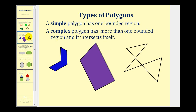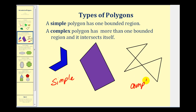Sticking to the previous definition of a polygon, there are two types of polygons. A simple polygon has one bounded region where the sides do not intersect. A complex polygon has more than one bounded region because the sides do intersect. These two are examples of simple polygons, and here is an example of a complex polygon.